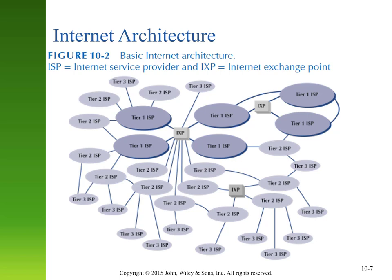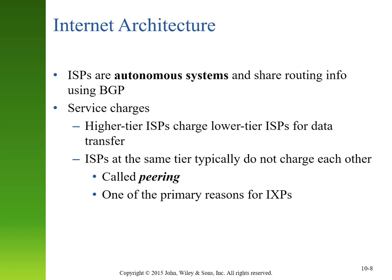If you look at this picture carefully, you can see there are lots of exceptions to the rule. There are some places where Tier 3s are connecting directly to an Internet Exchange Point, or where Tier 3s are connecting directly to other higher-level tiers. So this is not meant to be a strict hierarchy. Internet service providers are autonomous systems, and they share routing information between each other using the Border Gateway Protocol, which we discussed in an earlier chapter. That's a protocol that limits the number of choices available for traffic to move from location to location.